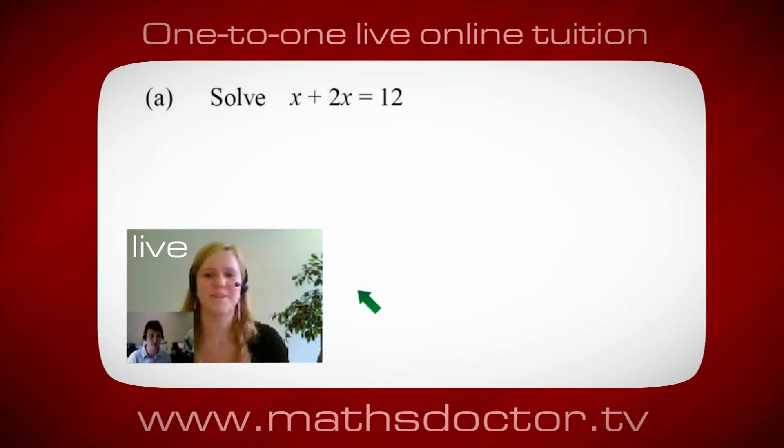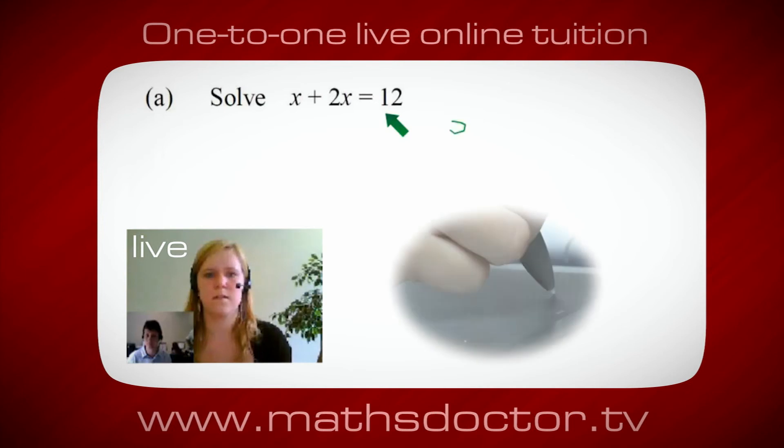Okay, Marie, so let's have a look at this one. So solve x plus 2x equals 12. So what do you think you do first? Okay, well, I want x on its own. So I would put x equals 12 minus 2x.